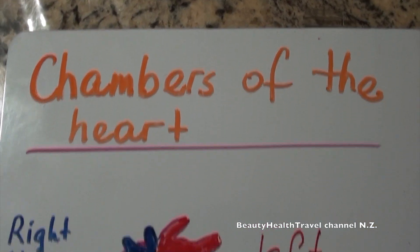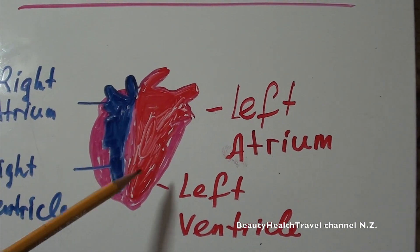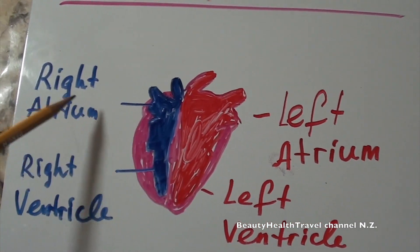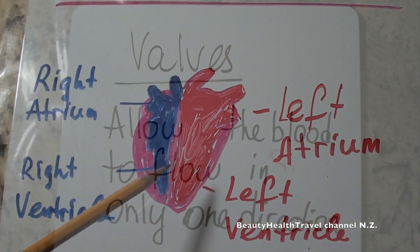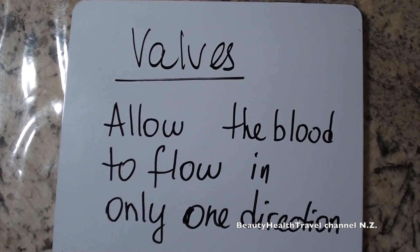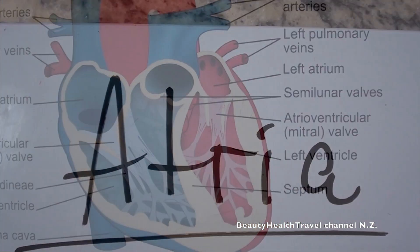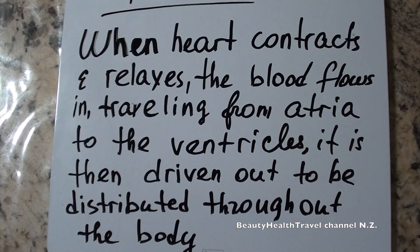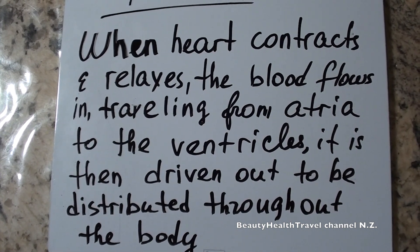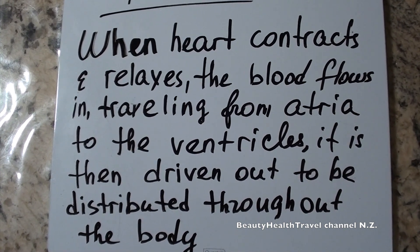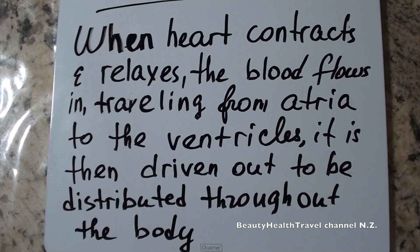Chambers of the heart: left atrium, left ventricle, right atrium, and right ventricle. Valves allow the blood to flow in only one direction. When the heart contracts and relaxes, the blood flows from the atria to the ventricles, and is then driven out to be distributed throughout the body.